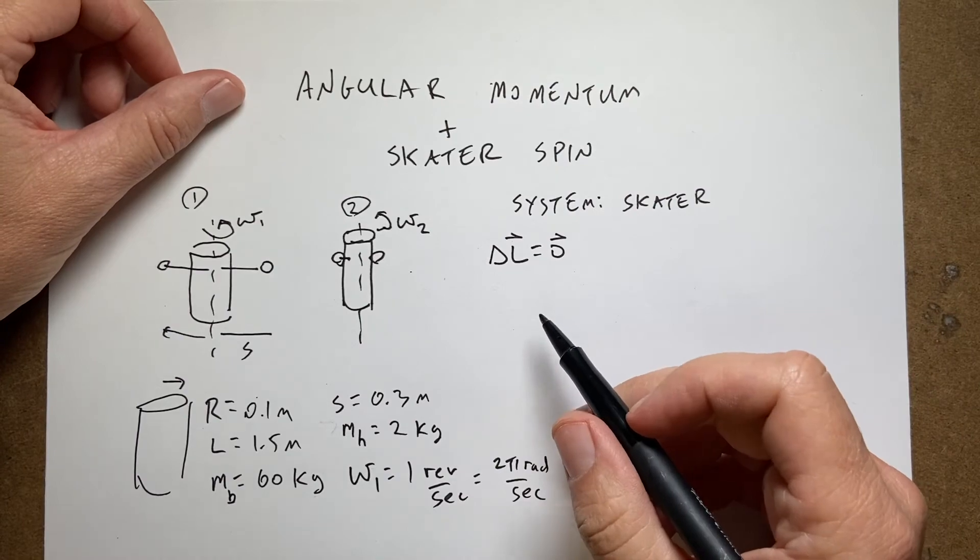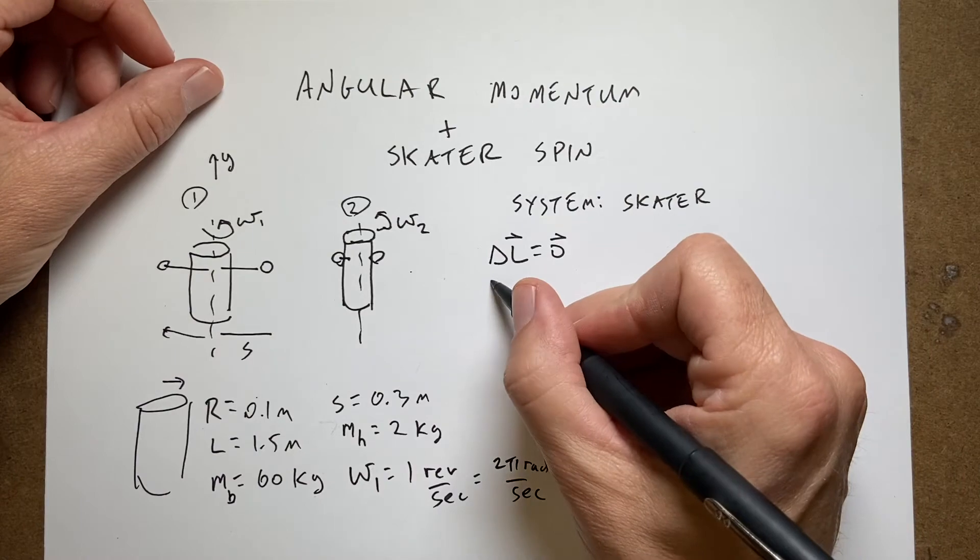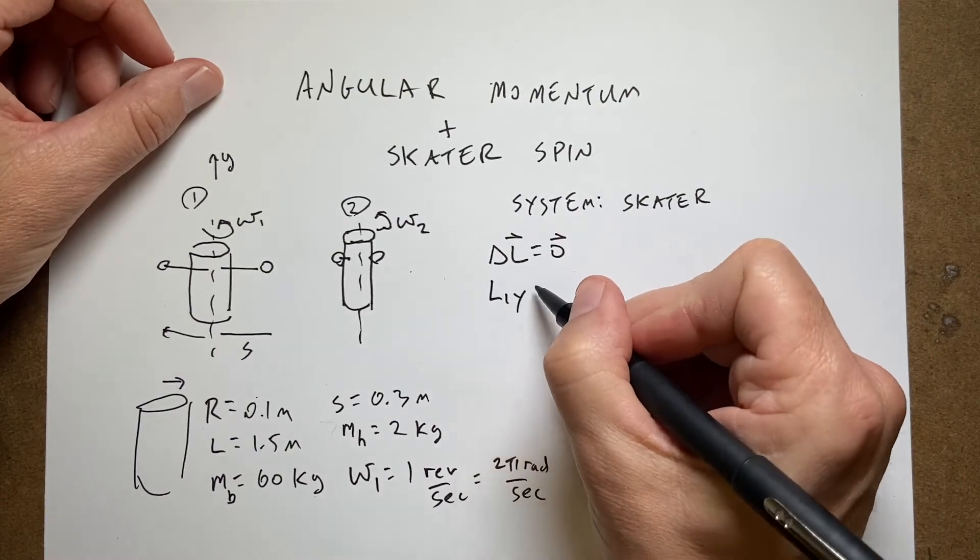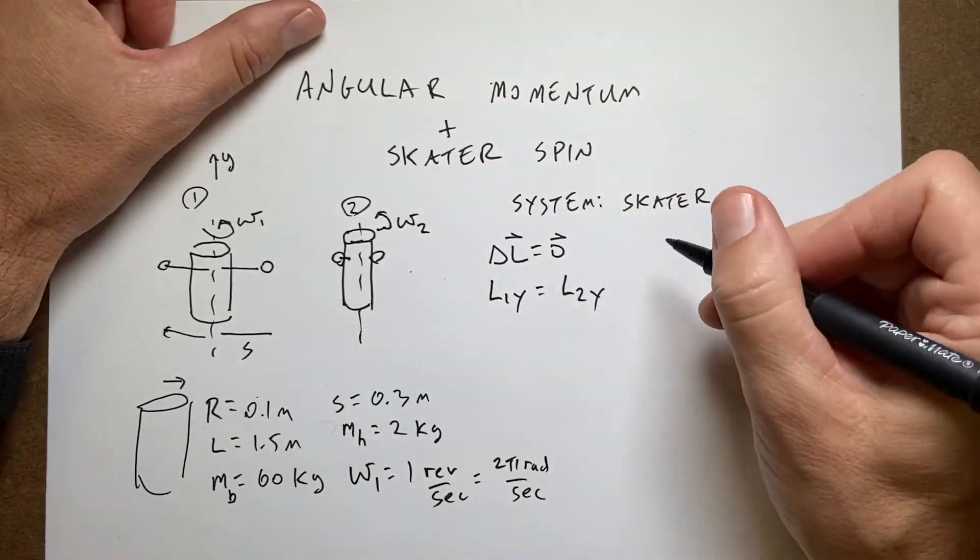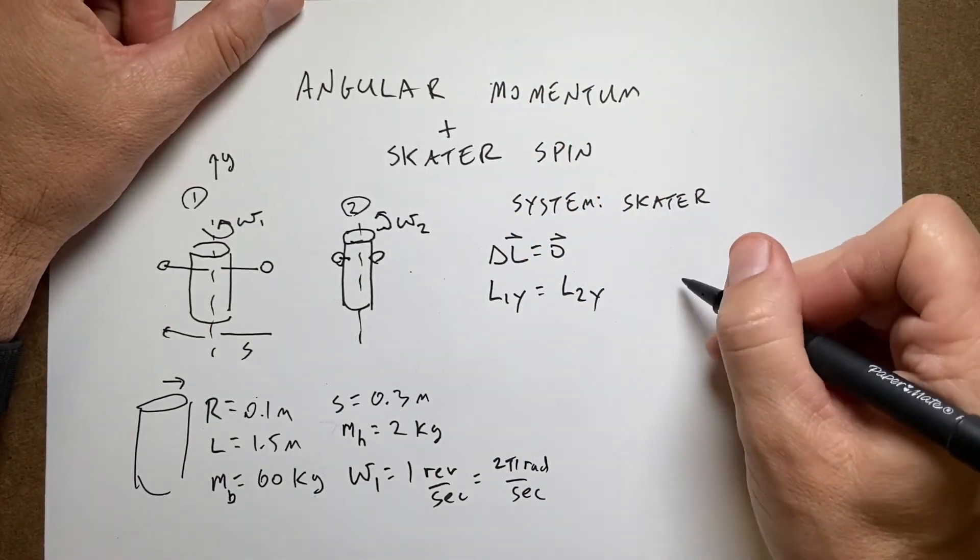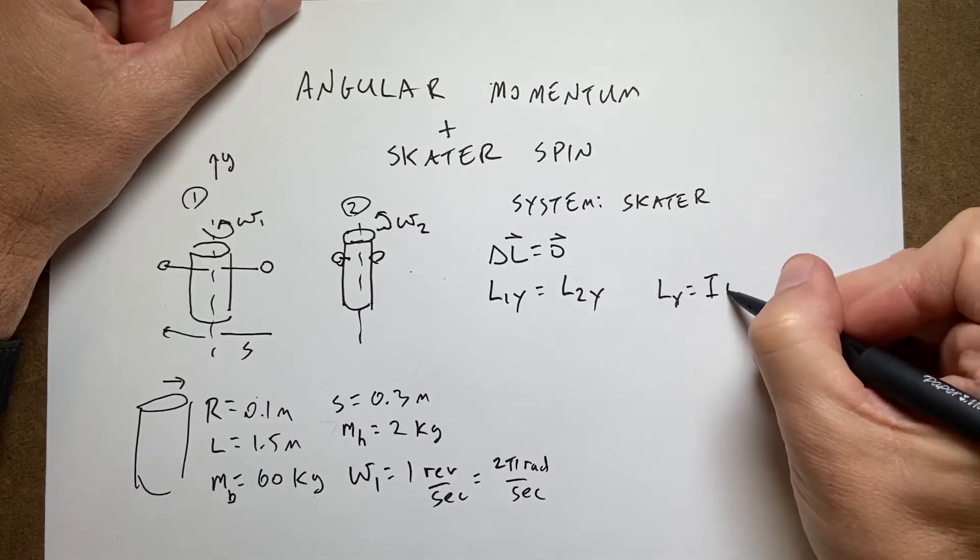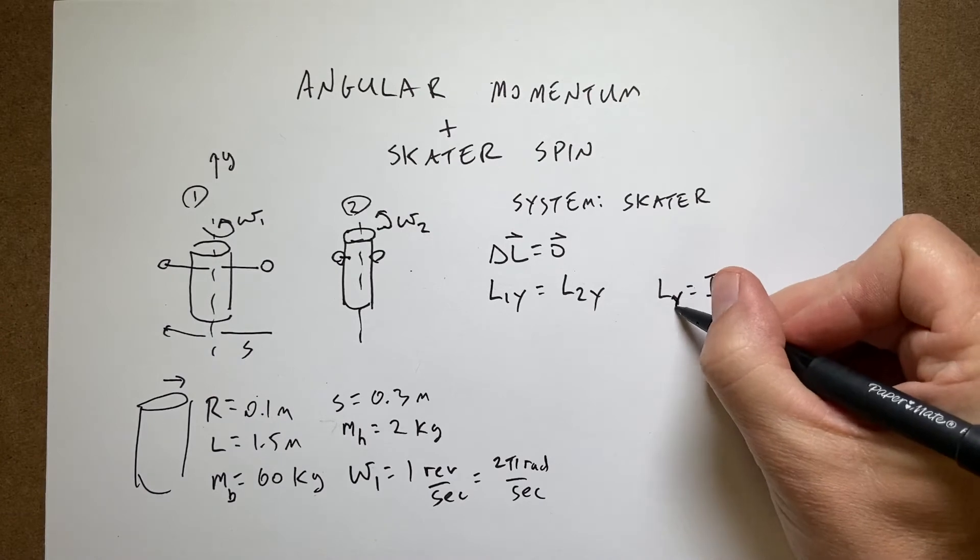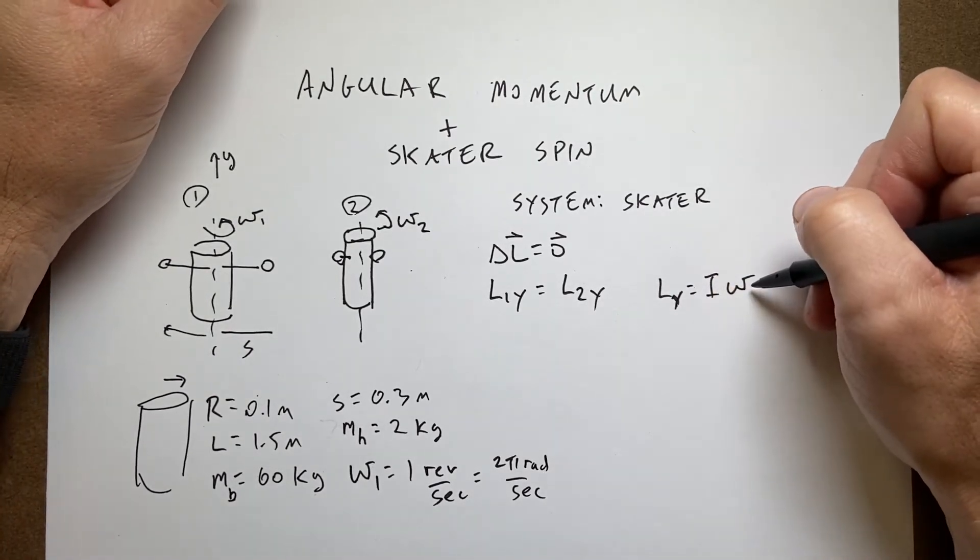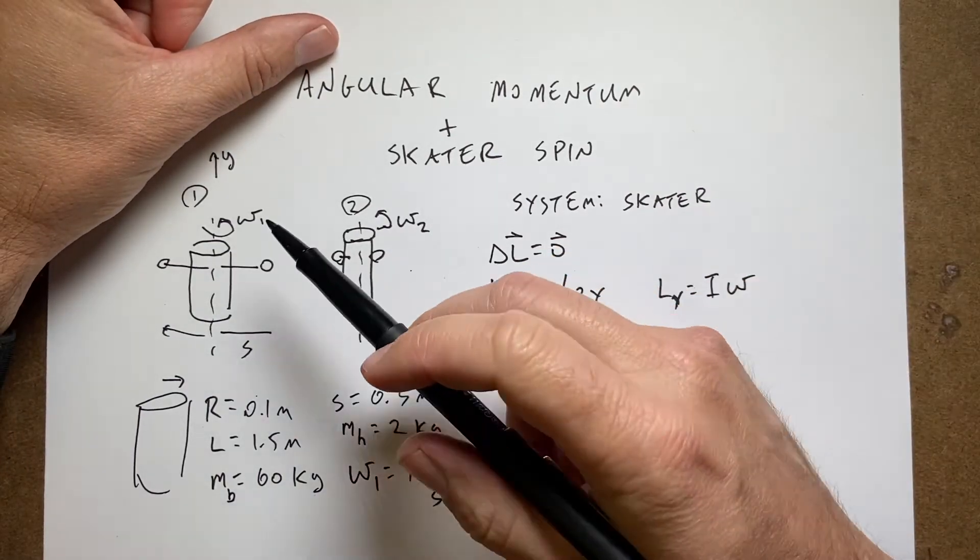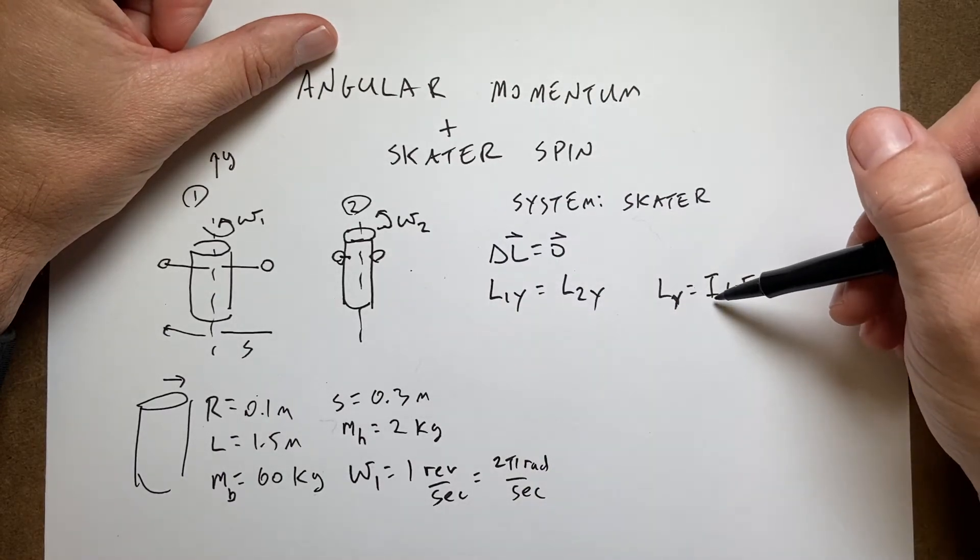So momentum is conserved and let's call this the y direction, then I can say L1y equals L2y. So these are the y components of the angular momentum where the definition of angular momentum in the y direction is going to be I·ω where ω is also in the y direction, where I is the moment of inertia and ω is the angular velocity. So I have the angular velocity to begin with, I'm trying to solve for the final angular velocity. So the question is about this I.